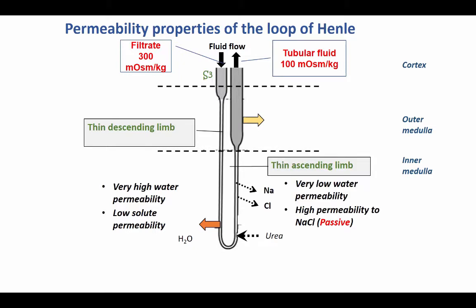The thin ascending limb of Henle is much different. It has a very low water permeability — keeping water inside the tubule — but it has a high permeability to sodium chloride. Importantly, this permeability is governed by passive mechanisms. We are not quite sure how sodium chloride leaves the cell; it could be via the tight junctions, but what matters is remembering the properties of each segment.